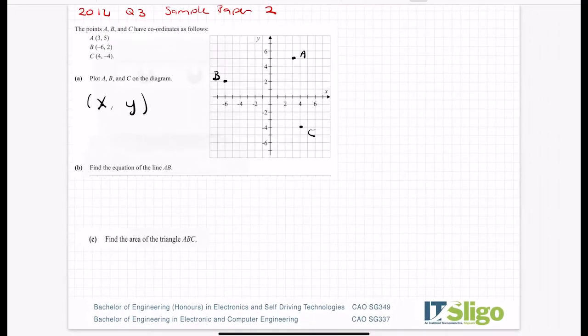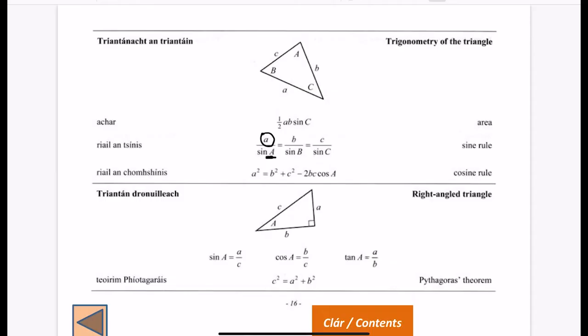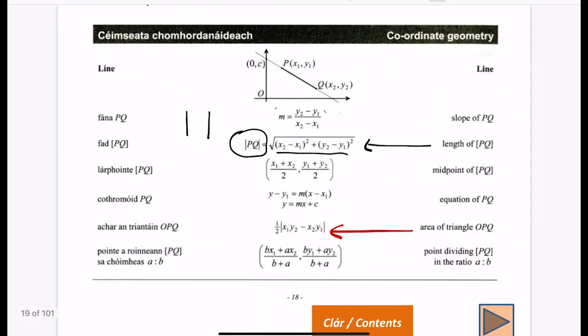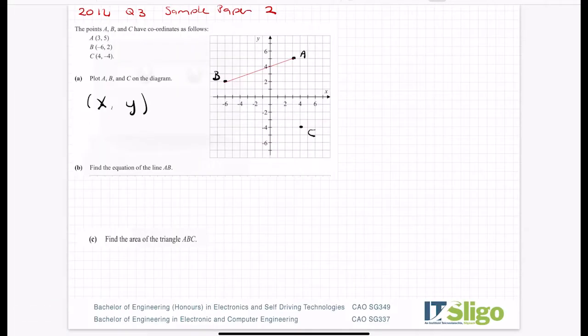So that's part A, plot A, B, C on the diagram. Part B then asks you to find the equation of a line. Now this is really important because this comes up quite a bit. To find the equation of a line AB, let's join that line AB just so we can see it. Let's find the equation of AB. So to the log tables to coordinate geometry page, which is page 18, and find the equation of the line.